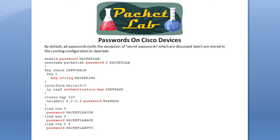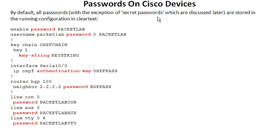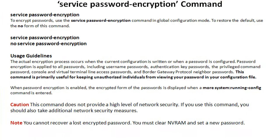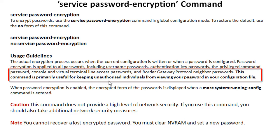This slide hammers home the fact that these passwords are stored in clear text in your configuration — with secret passwords being an exception, which we'll see shortly. Here's our hero: the `service password-encryption` command. This is a global configuration command, which matters for two reasons: one, you need to be in global configuration mode to configure it; and two, it affects all passwords on your device — you can't selectively encrypt one password but not another. Generally, if you're doing this, you're encrypting all unencrypted passwords on the box.